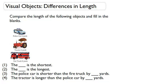We know the police car is 4 yards. The tractor is 6 yards. The fire truck is 8 yards. 4 is the smallest number, so the police car is the shortest. The fire truck is the longest because 8 is the biggest number.